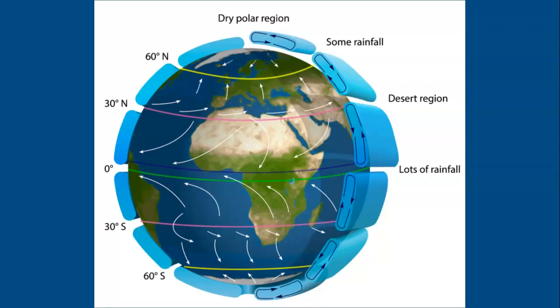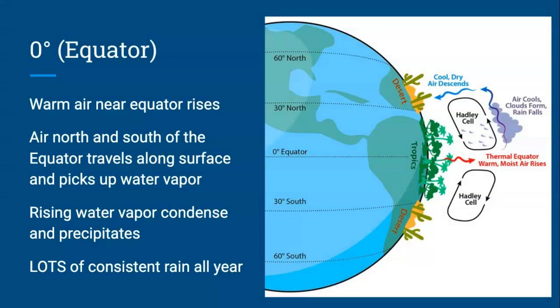So why does this happen? Well, let's start at the equator. We know that at the equator, it gets direct sunlight all year long, which means that the equator is the warmest, and the air over the equator warms and rises. As that air rises, air from north and south of the equator starts to move in to fill its place. And as the air moves in, it begins to pick up water vapor.